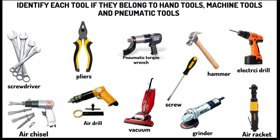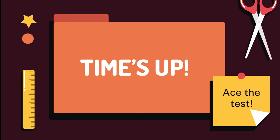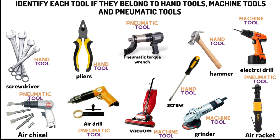You have 30 seconds to answer. Time is up! Let's look for the correct answers. Screwdriver is a hand tool; pliers, hand tool; pneumatic torque wrench, pneumatic tool; hammer, hand tool; electric drill, machine tool; air chisel is a pneumatic tool; air drill is a pneumatic tool; vacuum is a machine tool; wrench is a hand tool; grinder is a machine tool; and air racket is a pneumatic tool.